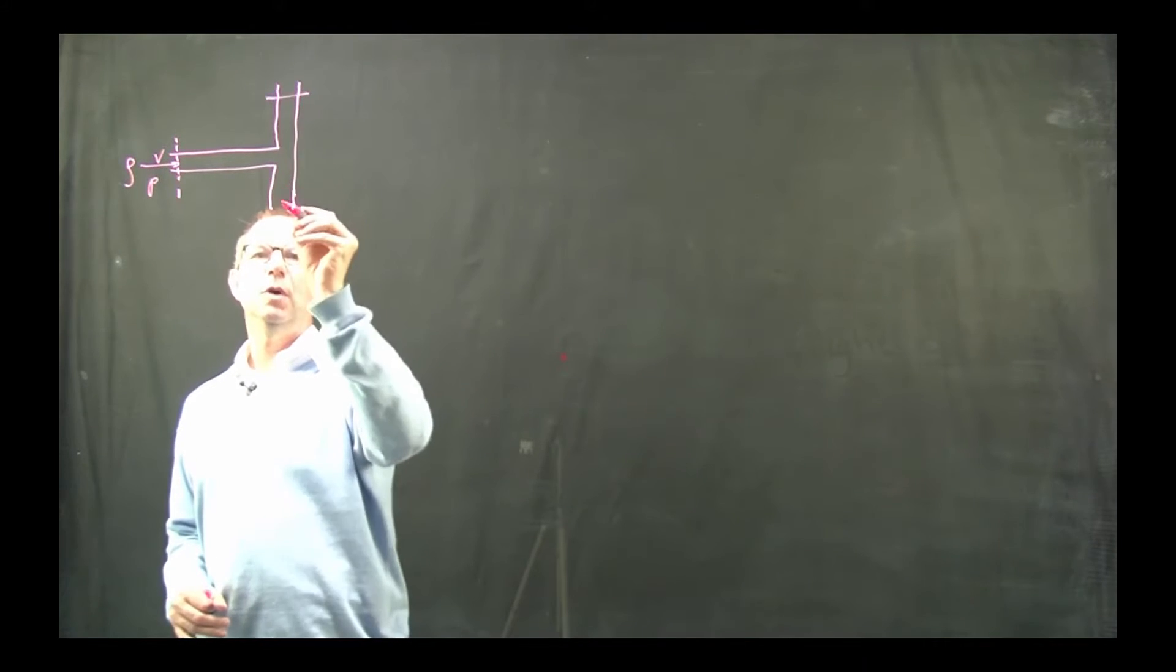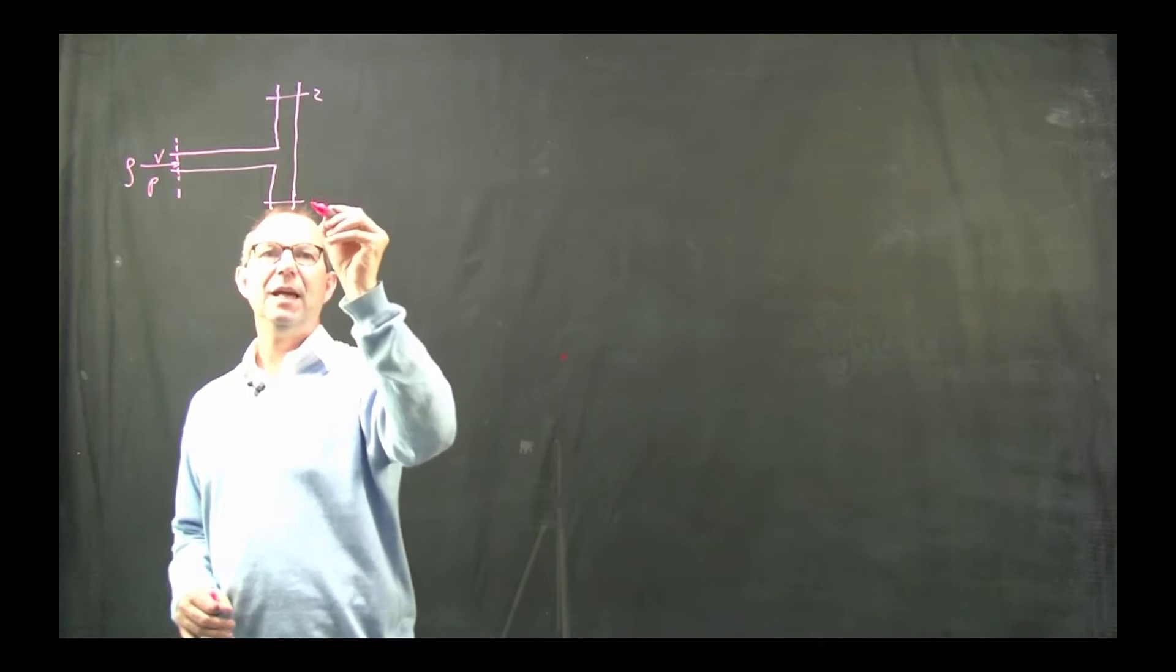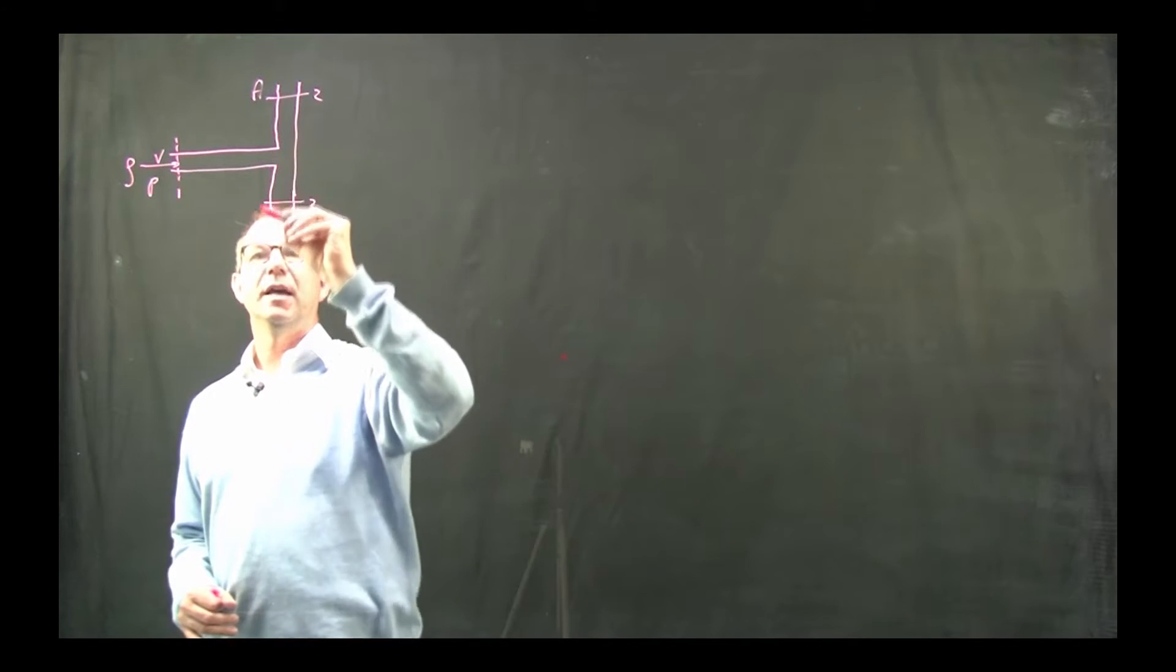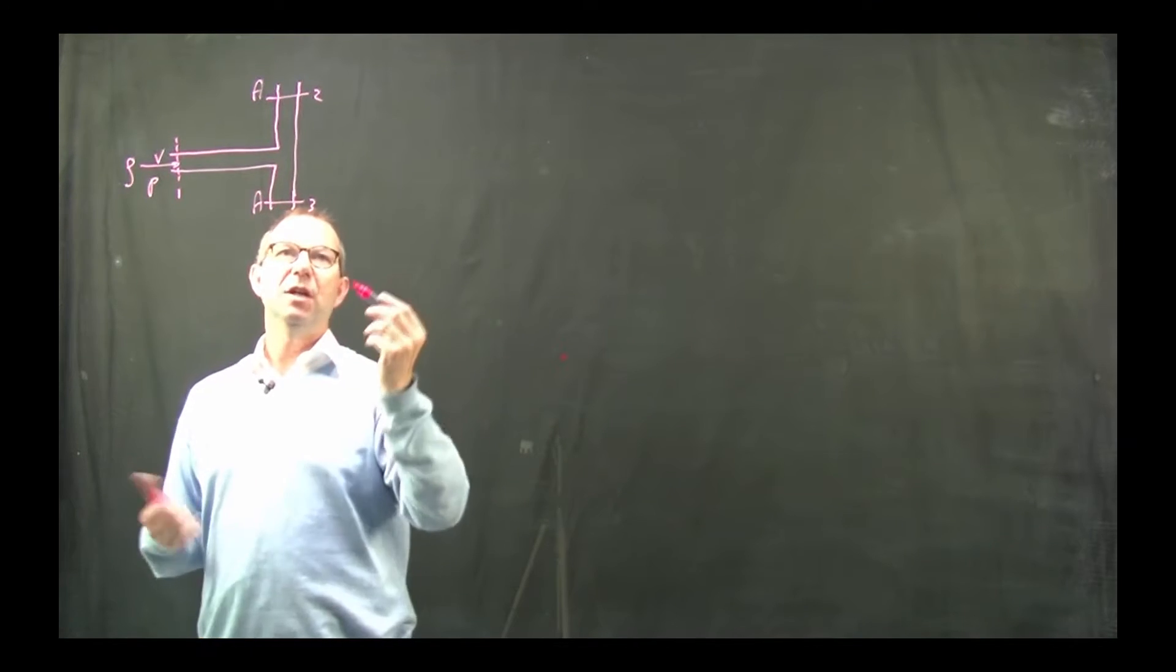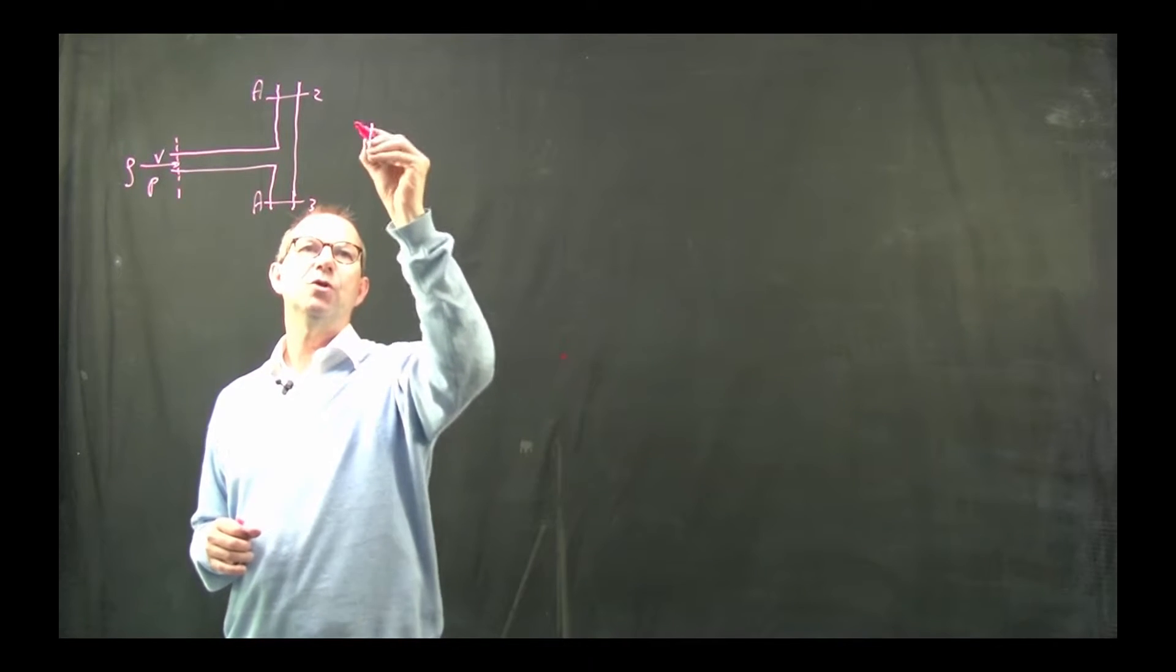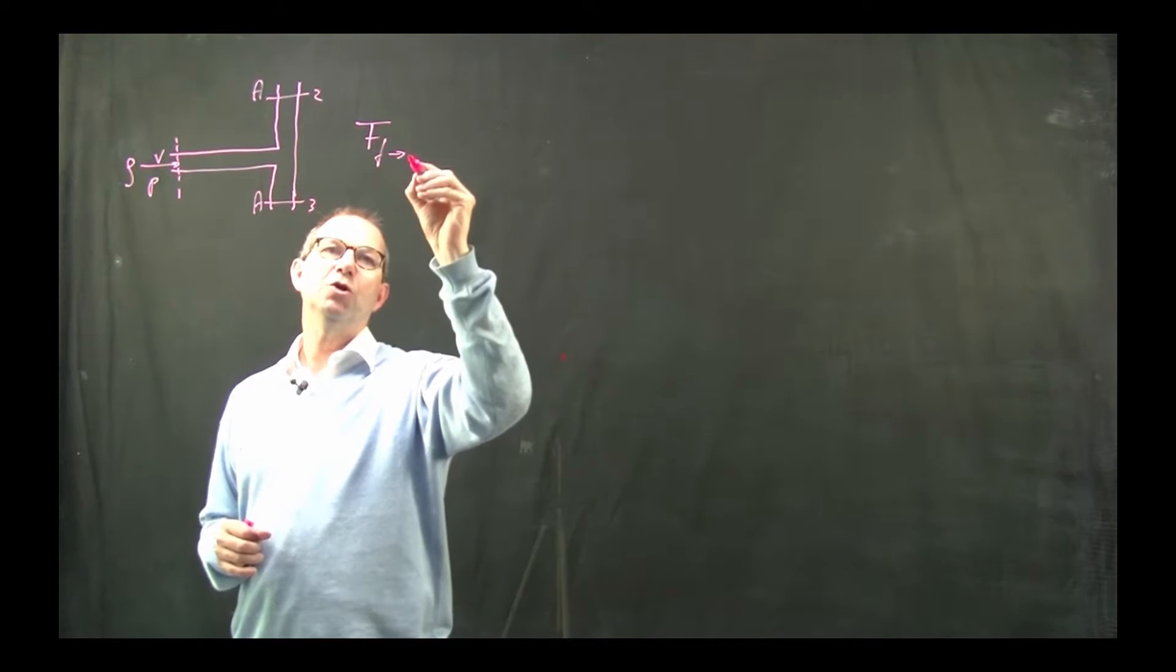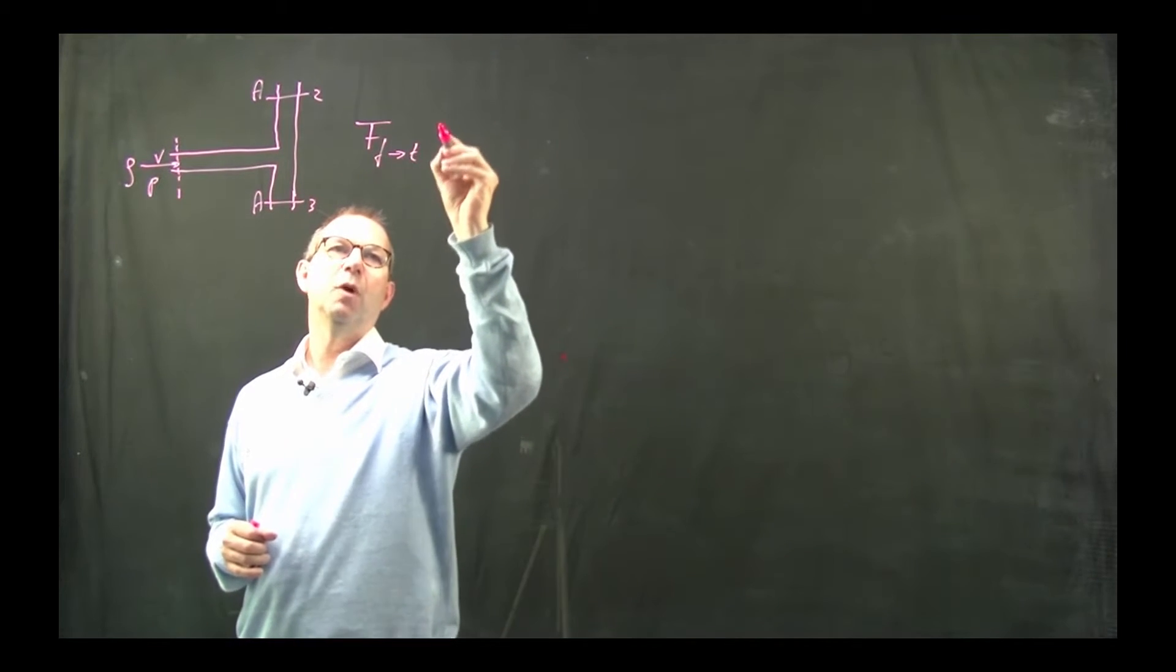And it can leave at two identical exits that are opposite of each other, each having an area A. And the question is what is the force acting from the fluid on the tube or the T if you want.